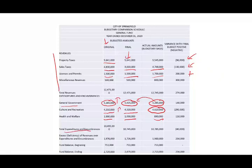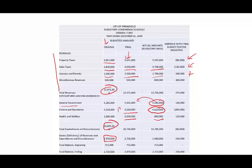The total excess or deficiency of revenue over expenditure: the original amount was $1,976,000. After budget revision, it went down to $1,726,000. The actual amount was $1,960,000 — we are still better off, with a positive variance of $234,000. The beginning fund balance was $753,000. So with $1,960,000 in revenue over expenditure this year, the ending fund balance is $2,713,000.